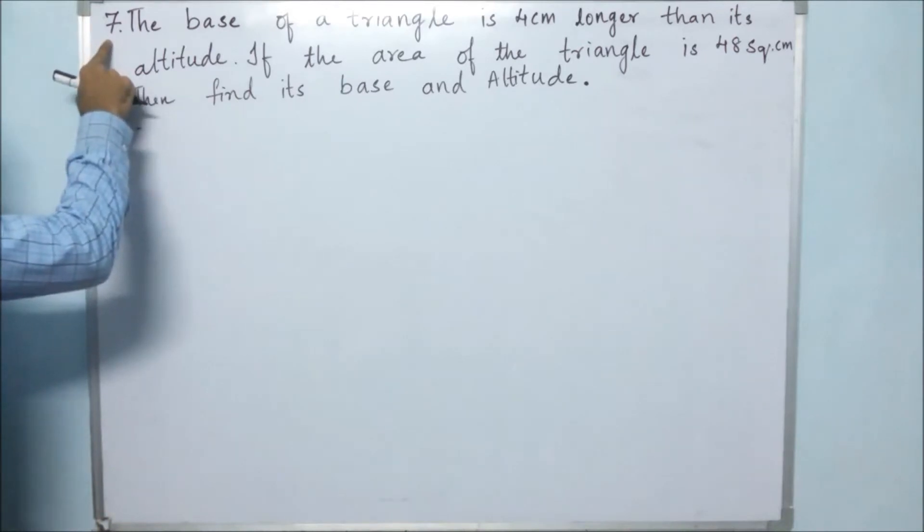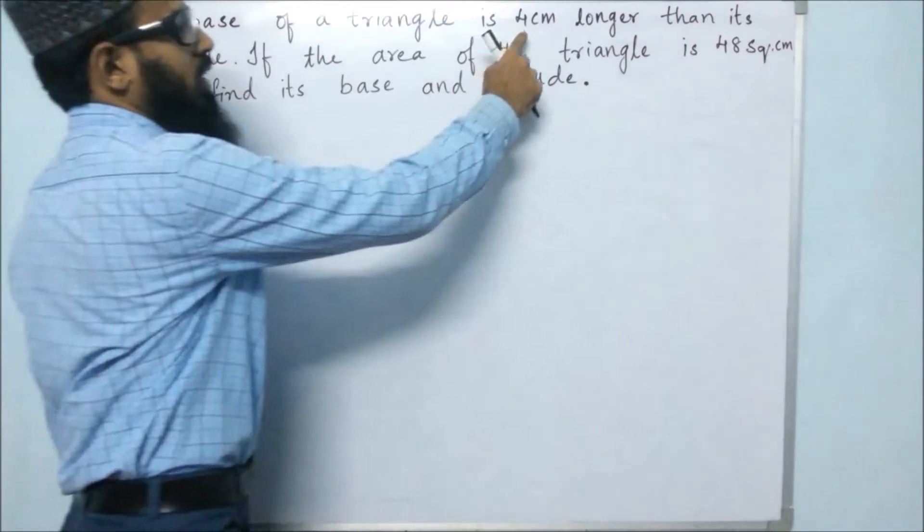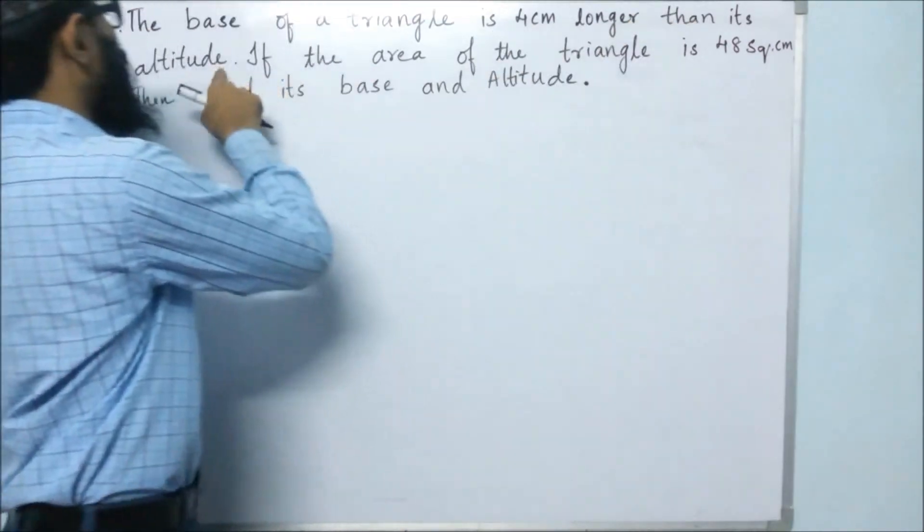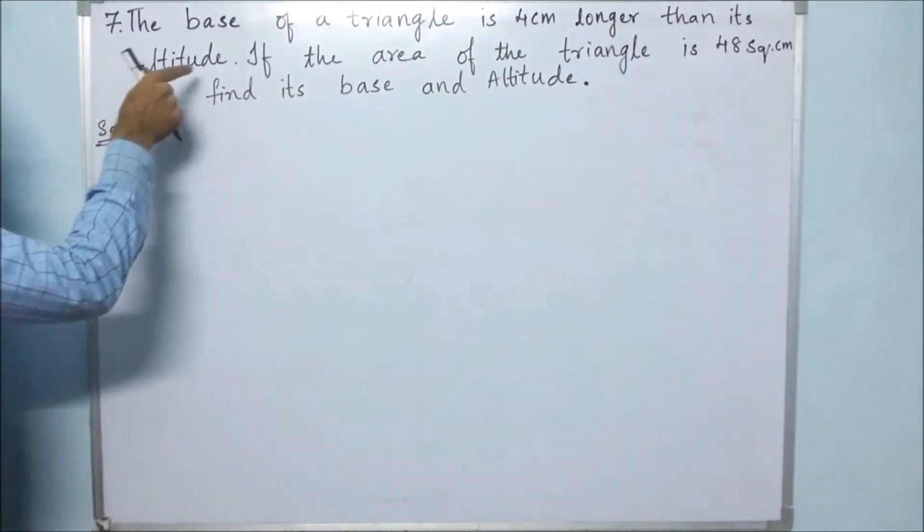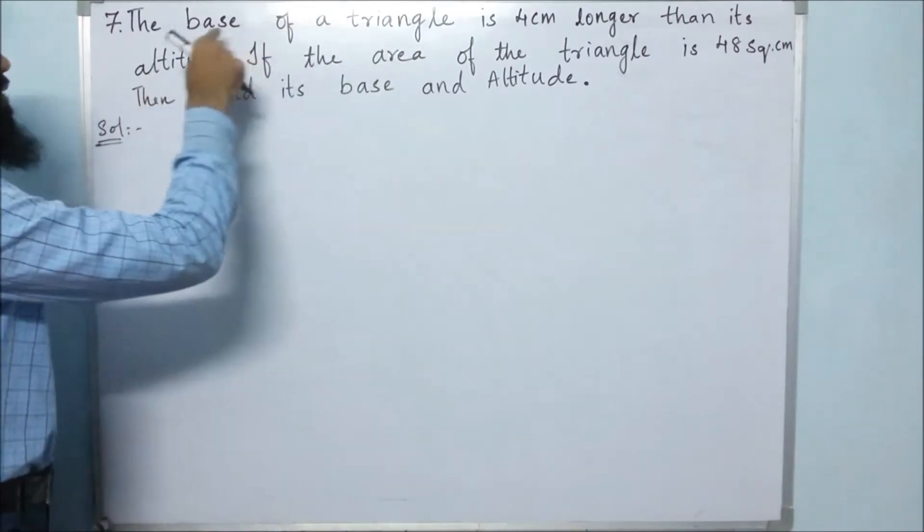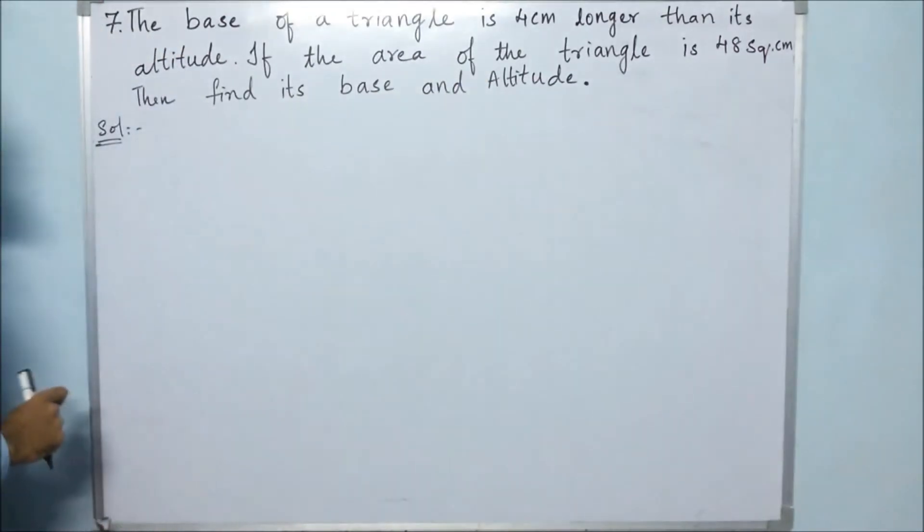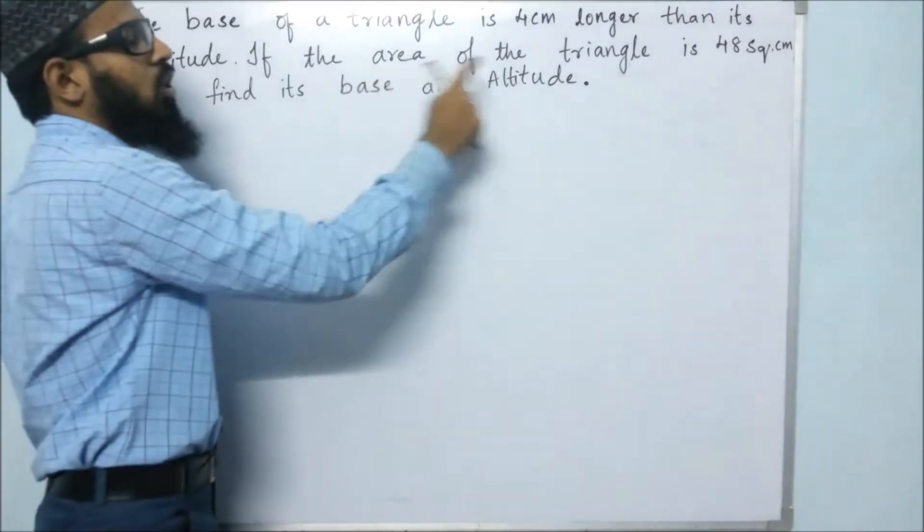In the 7th problem, they said that the base of a triangle is 4 cm longer than its altitude. That means if we know the altitude and add 4 to it, we will get the base. If the area of the triangle is 48 square cm, then find its base and altitude. They have given the area also.